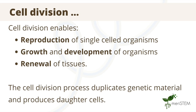Cell division has many functions, which may be different in different organisms. Its primary functions are involved in the reproduction of single-celled organisms, in the growth and development of cells, and in the renewal of tissues. And this whole process involves duplicating genetic material to produce daughter cells.